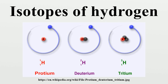Decay chains: The majority of heavy hydrogen isotopes decay directly to 3H, which then decays to the stable isotope 3He. However, 6H has occasionally been observed to decay directly to stable 2H. Note that the decay times are in yoctoseconds for all isotopes except 3H, which is expressed in years.